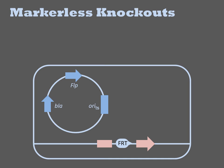Growth of the cells at a non-permissive temperature results in clearance of the helper plasmid. Thus, the original target is disrupted with no residual modifications.